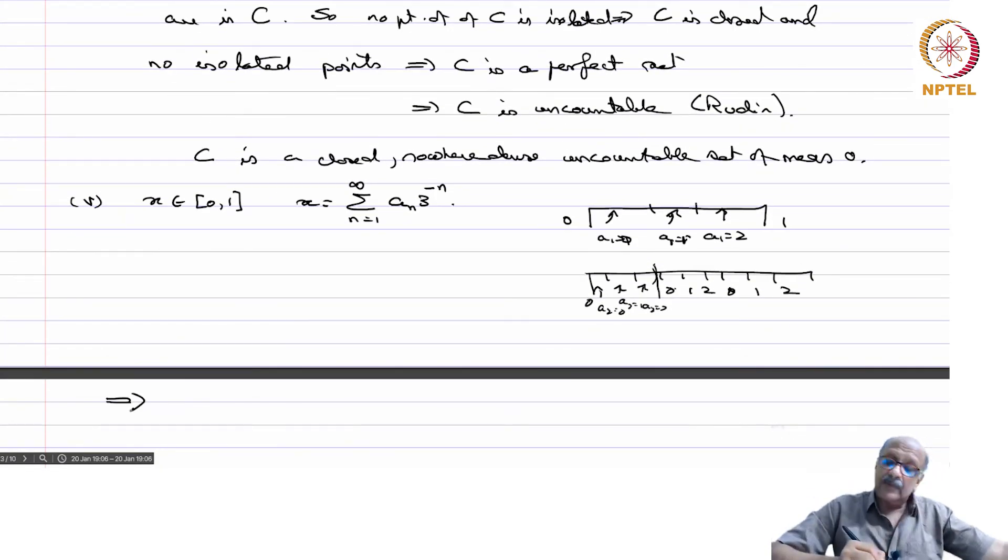So this implies, what does it mean? We have removed all the middle thirds to get C. So C equals the set of all x such that if you write x equals sigma an/3^n, n equals 1 to infinity, then an equals 0 or 2 for all n.